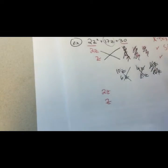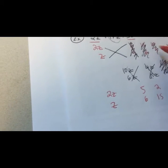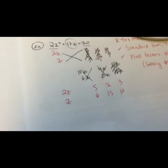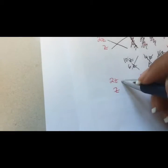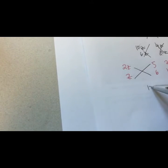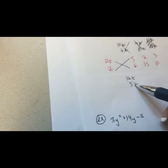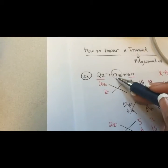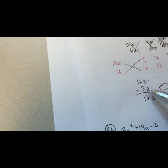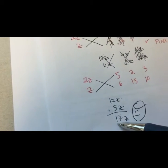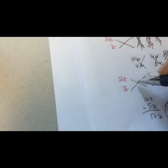None of those worked, so let's flip the numbers upside down and try again with 2z and z. I try 5 and 6, 2 and 15, and 3 and 10 in the flipped order. When I do the X method with 5 and 6: 2z times 6 gives me 12z, and z times 5 gives me 5z. Can I add or subtract to get 17z? Yes! 12z plus 5z equals 17z — these are my winning lottery number tickets!